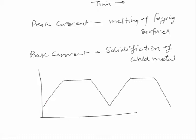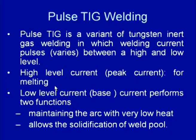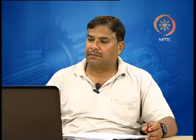The high level peak current is mainly used for melting of the faying surfaces. The low level base current performs two functions: it helps to maintain the arc during welding with very low heat, and during this period solidification of the weld metal takes place. The schematic diagram shows that IB is the base current, IP is the peak current, and TP is the pulse duration — the duration for which the peak current is maintained. The duration for which the base current is maintained is called TB.